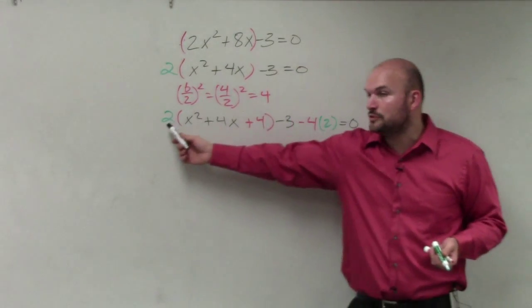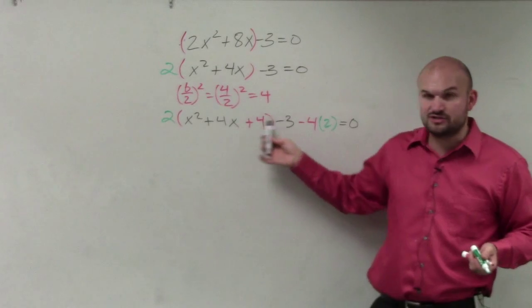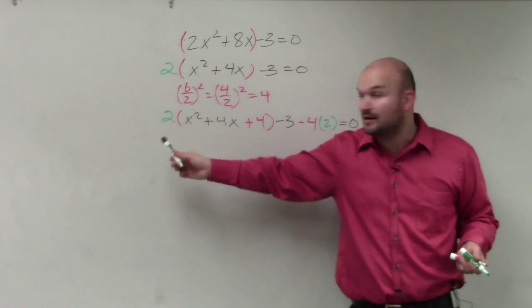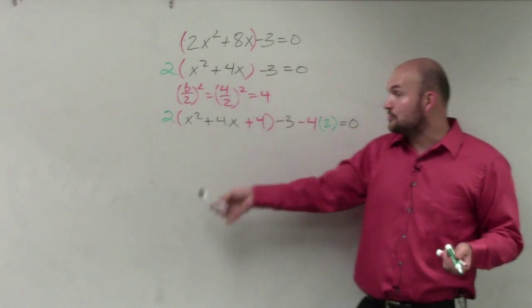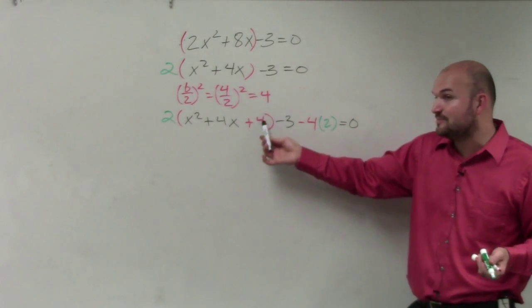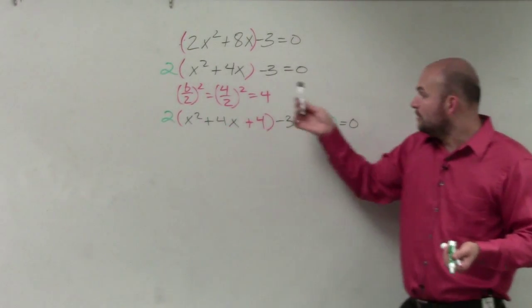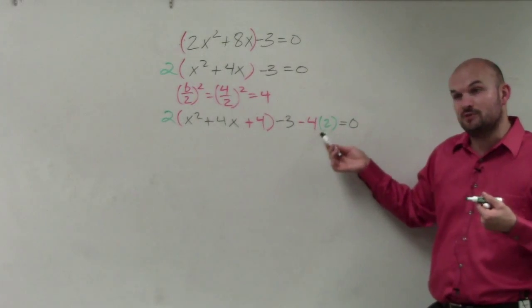Again, the reason why, ladies and gentlemen, if you were to multiply this 2 into this trinomial using distributive property, this 4 is really being multiplied by 2. Correct? So if you're adding a 4 inside the parentheses that's being multiplied by 2, when you subtract the 4, you also need to multiply by 2.